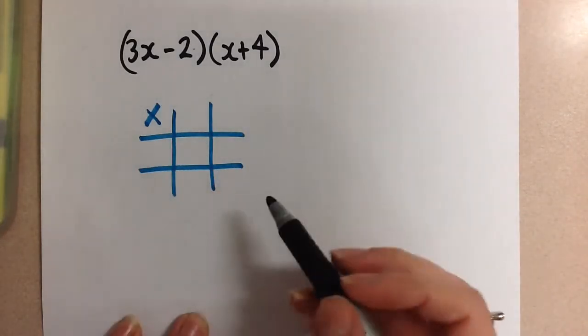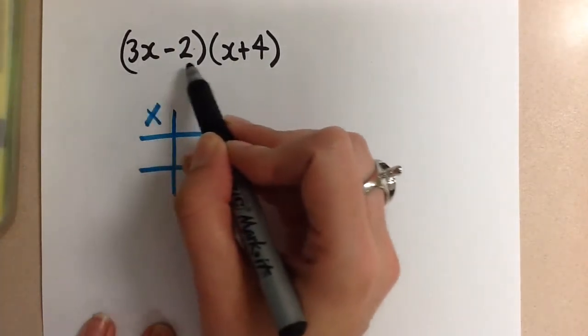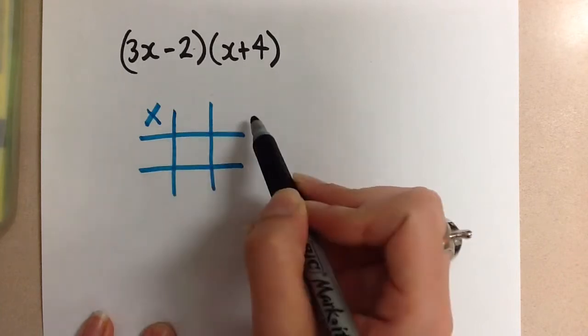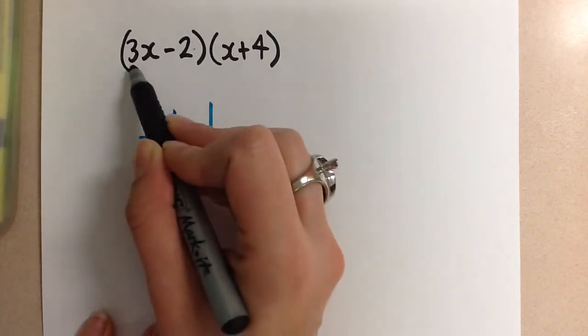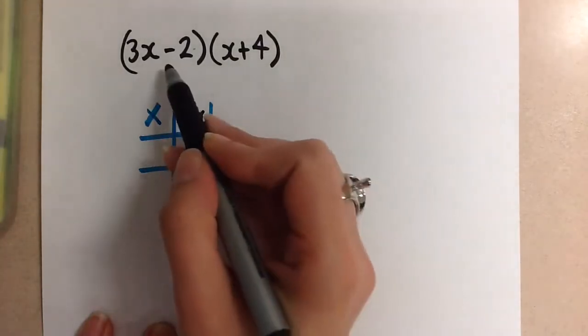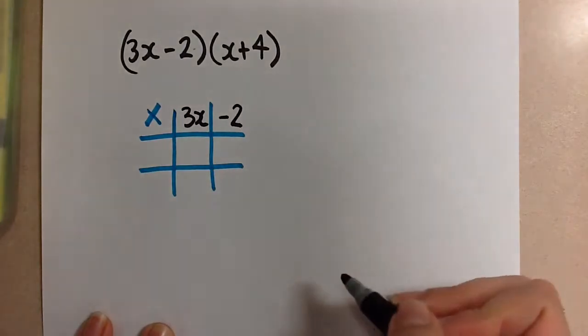Now, we take this multiplication chart, and we're going to fill in the terms that come from the two binomials. So let's do the first binomial on the top row of the multiplication chart. So we're going to write 3x here. And then we have the minus 2. We're going to put it here. Don't drop that negative sign when you do it.